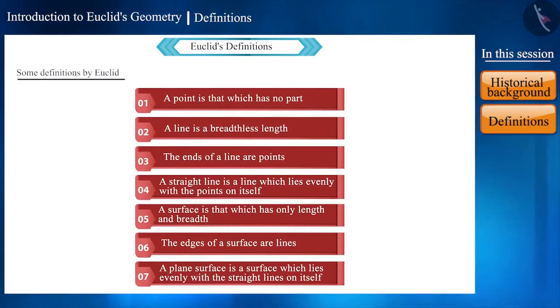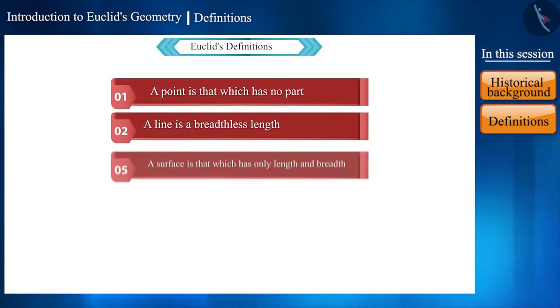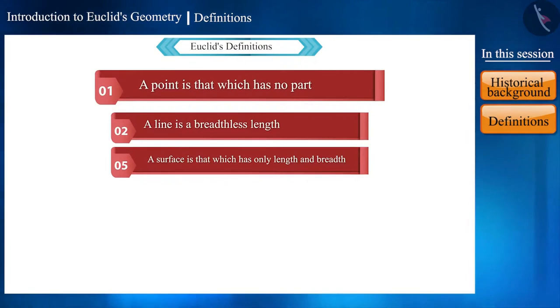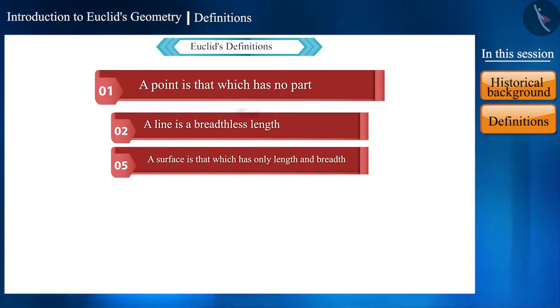There is a need to define several terms in the definitions given by Euclid. Such as, area in the first definition, length and breadth in the second and fifth definitions. If in the first definition, we define an area by the space it occupies, then we will need to define space as well.